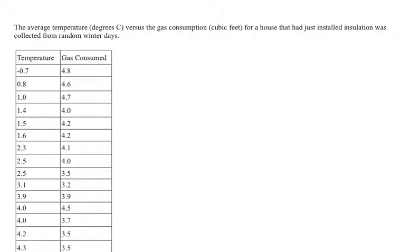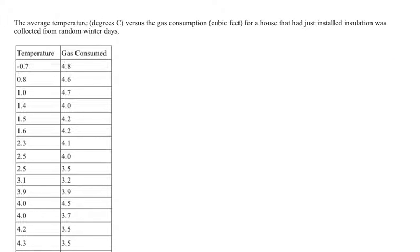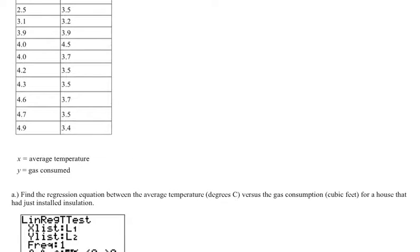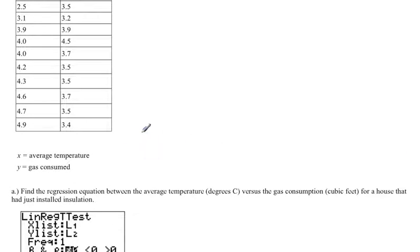We have to decide which variable is our predictor variable and which variable is our explanatory variable. The explanatory variable explains what's happening in the predictor variable. It seems to make more sense for the average temperature to tell you what the gas consumed would be. So that makes the average temperature x the explanatory variable and therefore gas consumed we'll call y the predictor variable.